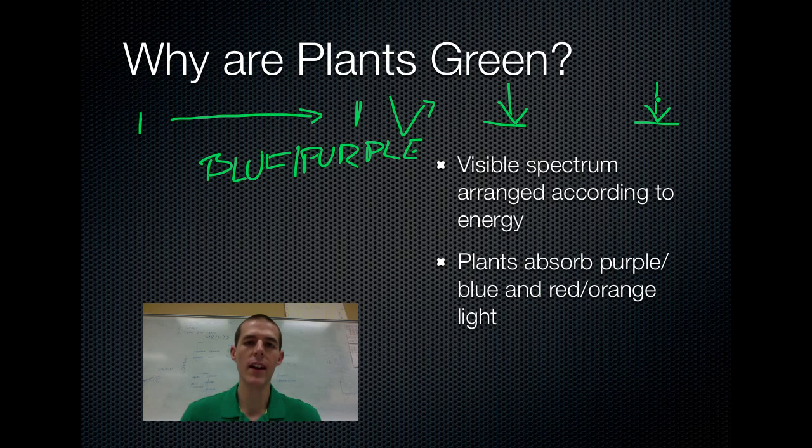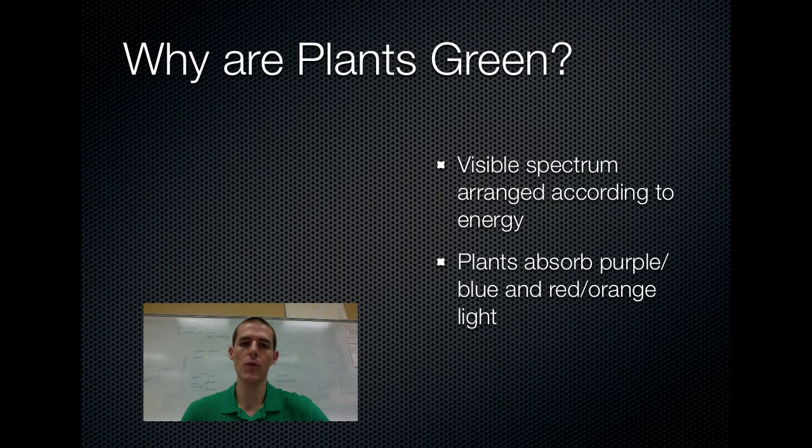The chlorophyll takes it in, it uses that energy to do what it needs to do. Green light is useless to our plants. So chlorophyll actually reflects any green light that hits it. So this is why we see plants as being green. Because the purple-blue and the red-orange light is absorbed, that's held onto by the plant, but the green light is reflected back and of course enters our eyes and we see plants as a beautiful green color.